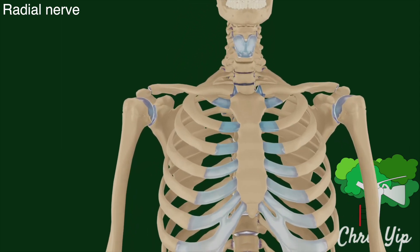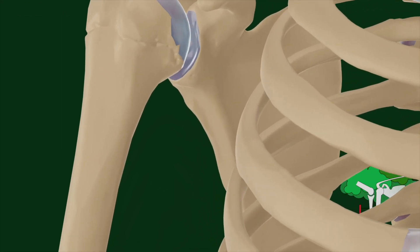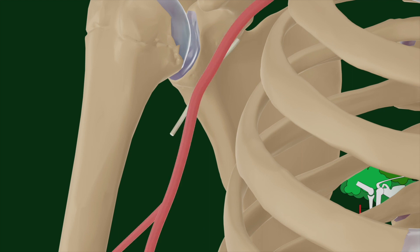The radial nerve is the largest branch of the brachial plexus, arising from the posterior cord. Its descent begins posterior to the brachial artery, eventually moving lateral to it, lower down the humerus.